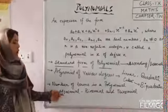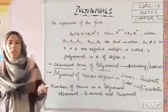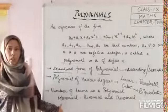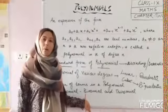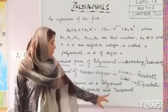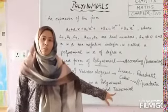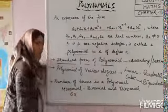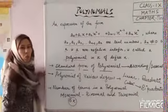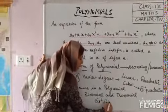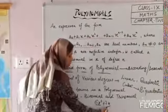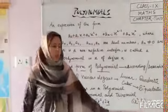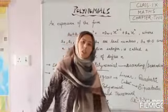Next, the number of terms in a polynomial. Terms are separated by plus or minus. They are monomial, binomial, and trinomial. Mono means single — a polynomial with one term is a monomial. Bi means two terms — a polynomial with two terms. Tri means three terms. For example, 6x is a monomial. 6x² + 2x is a binomial with two terms. And 6x³ minus ... is a trinomial with three terms.